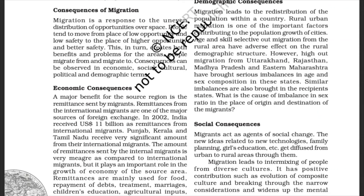Demographic Consequences: Migration leads to the redistribution of the population within a country. Rural-urban migration is one of the important factors contributing to population growth of cities. Age and skill selective out-migration from rural areas have an adverse effect on the rural demographic structure. High out-migration from Uttarakhand, Rajasthan, Madhya Pradesh, and Eastern Maharashtra has brought serious imbalance in age and sex composition in these states. Similar imbalances are also brought in the recipient states.